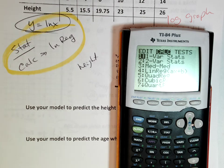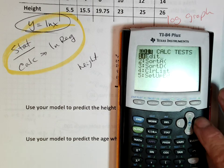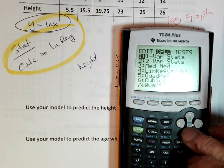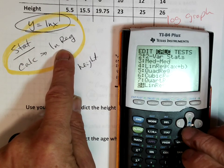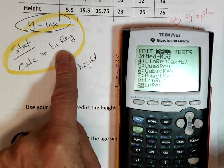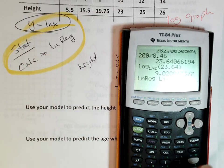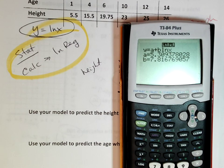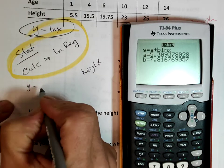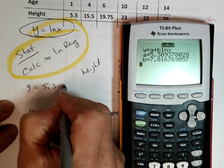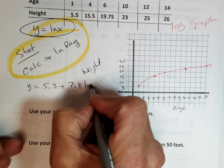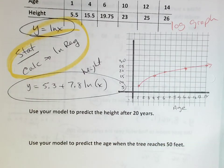We're going to go to stat again, calculate. You go back to stat, and then you go over to calculate because I want to calculate an answer. Now I'm looking for this ln reg, so I'm going to go down until I find it. There it is, ln, which means the natural log regression line. Enter. List one, list two, go down and calculate. It gives me a which is 5.3, and it gives me 7.8 which is b. So my equation is going to be y equals 5.3 plus 7.8 ln of x. That's my equation.